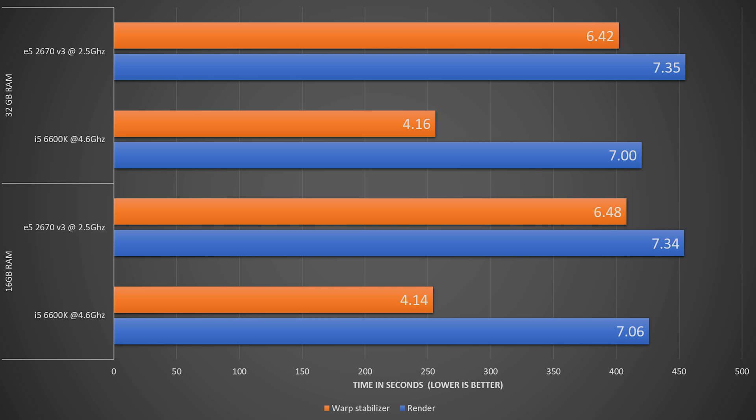And even more interestingly, the i5 was significantly faster than the Xeon at stabilizing the footage. I don't apply color correction to my videos, so I did not include any tests with color grading and LUTs. Maybe I'll do that later when I start using it, but for now I have no experience with it, so it doesn't make sense to do that kind of testing.